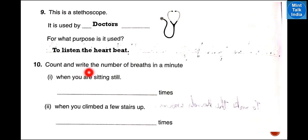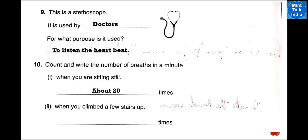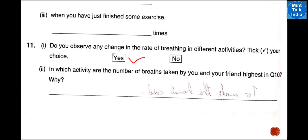Count and write the number of breaths in one minute. When you are sitting still, the breath is about 20 times per minute. When you climbed a few stairs, becoming a little active, the breath will be around 25 times per minute. After finishing some exercise, the breath will be maximum about 30 to 40 times per minute.